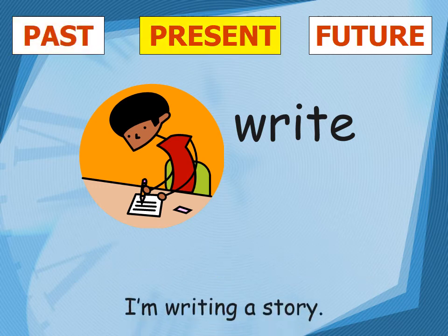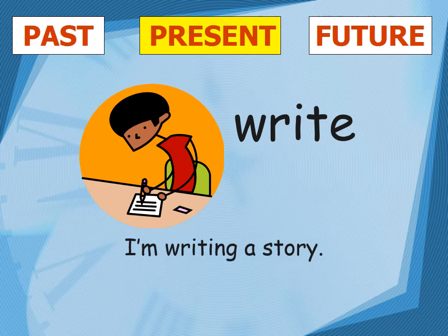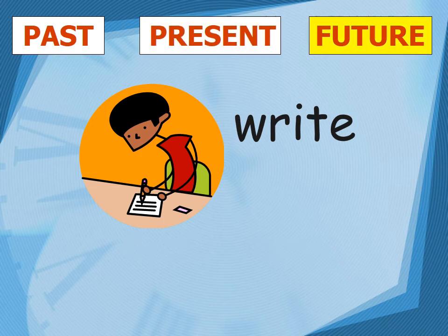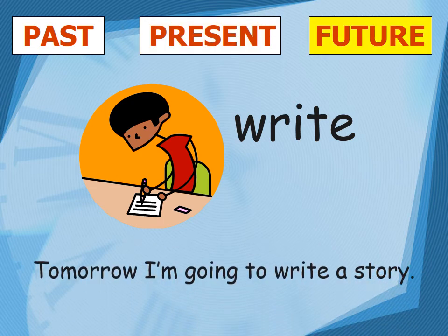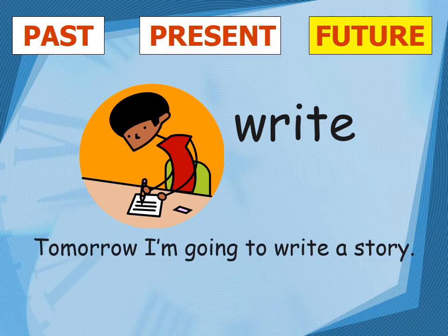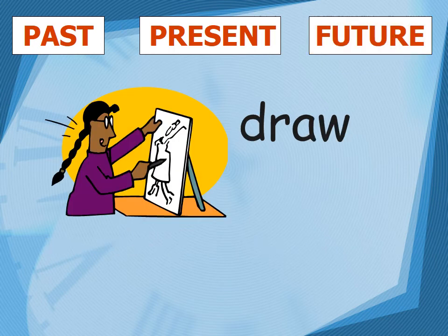For present tense: 'I am writing a story now' — at this point in time, at this moment, 'I am writing a story.' This is an example of present tense for the verb form 'write.' For future tense: 'Tomorrow I am going to write a story' or 'Tomorrow I will be writing a story.'